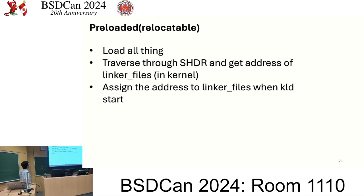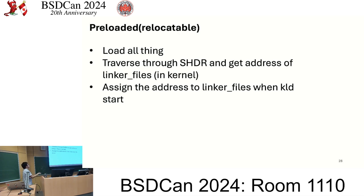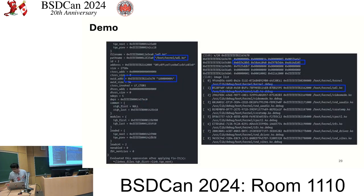The other case is the relocatable file. In a relocatable file, we have to load all sections. There's a complication because relocatable kernel modules don't have preload information. So I don't use preload info for relocatable files — instead, in the kernel, I traverse the SHDR and get the address of the .note.gnu.build-id section and store it into the linker file structure. Some parts of the implementation are the same for both preloaded modules and KLD-loaded modules.